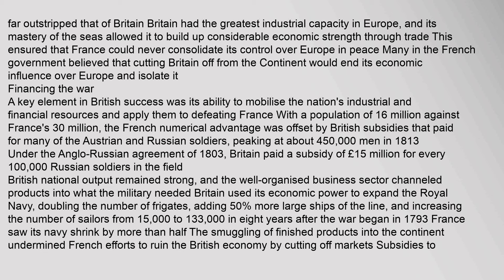Many in the French government believed that cutting Britain off from the continent would end its economic influence over Europe and isolate it. A key element in British success was its ability to mobilize the nation's industrial and financial resources. With a population of 16 million against France's 30 million, the French numerical advantage was offset by British subsidies that paid for many of the Austrian and Russian soldiers, peaking at about 450,000 men in 1813. Under the Anglo-Russian Agreement of 1803, Britain paid a subsidy of £15 million for every 100,000 Russian soldiers in the field. Britain used its economic power to expand the Royal Navy, doubling the number of frigates and increasing the number of sailors from 15,000 to 133,000 in eight years.